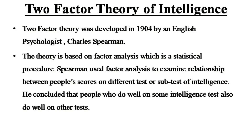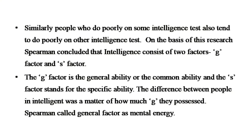Coming to the first theory: two-factor theory of intelligence. Two-factor theory was developed in 1905 by English psychologist Charles Spearman. The theory is based on factor analysis, which is a statistical procedure. Spearman used factor analysis to examine the relationship between people's scores on different tests or sub-tests of intelligence. He concluded that people who do well on some intelligence tests also do well on other tests, and similarly, people who do poorly on some intelligence tests also tend to do poorly on other intelligence tests.